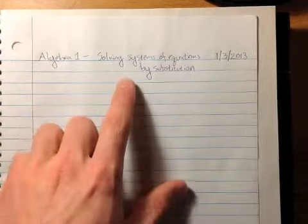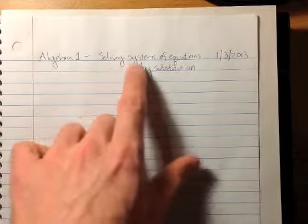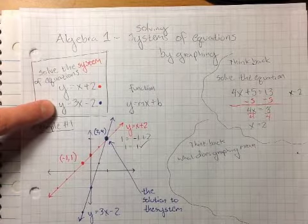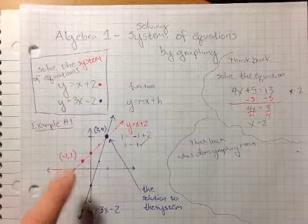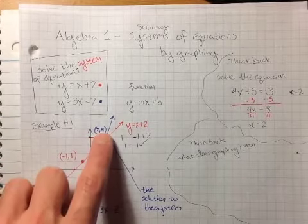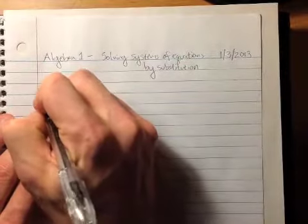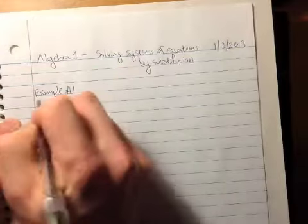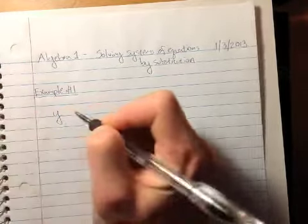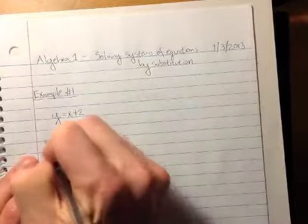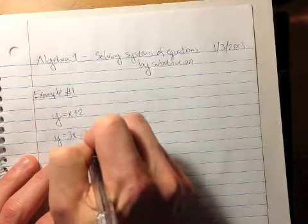Now let's think back to the last video that we watched, in which we solved systems of equations by graphing. This was the first example we looked at in that video. We solved this system of equations by graphing them, and the solution we came up with was (2, 4): x is 2 and y was 4. So let's use this same exact system of equations but solve it in a different way. Example number 1: y equals x plus 2 was the first equation, and y equals 3x minus 2 was the second equation.